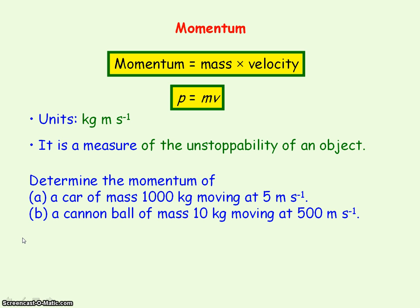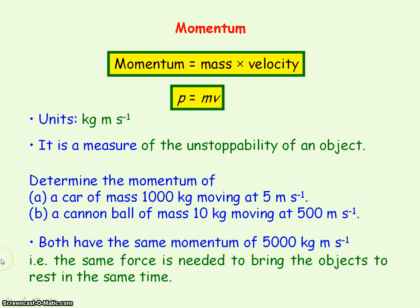So if we again consider a car of mass 1000 kg moving at 5 meters per second and a cannonball of mass 10 kg moving at 500 meters per second, well, they both have the same momentum, so they both need the same force to bring it to rest in the same time.